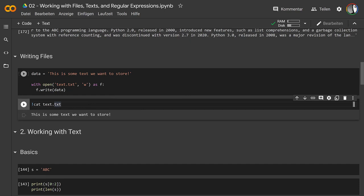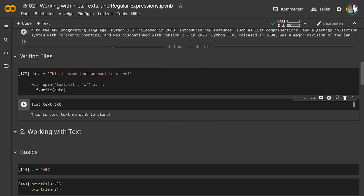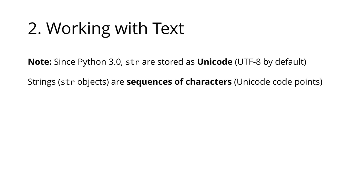Reading and writing files in Python is very straightforward. It's best to always use the `with` construction. Now that we know how to open, close, read, and write files, let's look at text. Since Python 3, strings are always stored as Unicode — it's UTF-8 by default — so we don't have to worry too much about encodings.